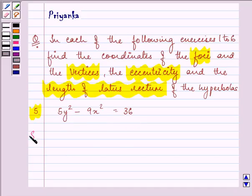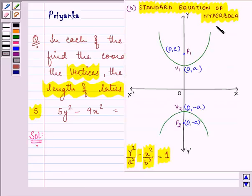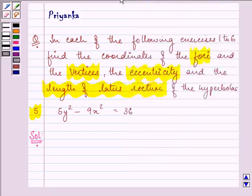So let us proceed with our solution. We are well aware of the standard equation of the hyperbola when foci lies on the y-axis, and it is y²/a² - x²/b² = 1. So we shall be using the knowledge of this standard equation to proceed with our solution.